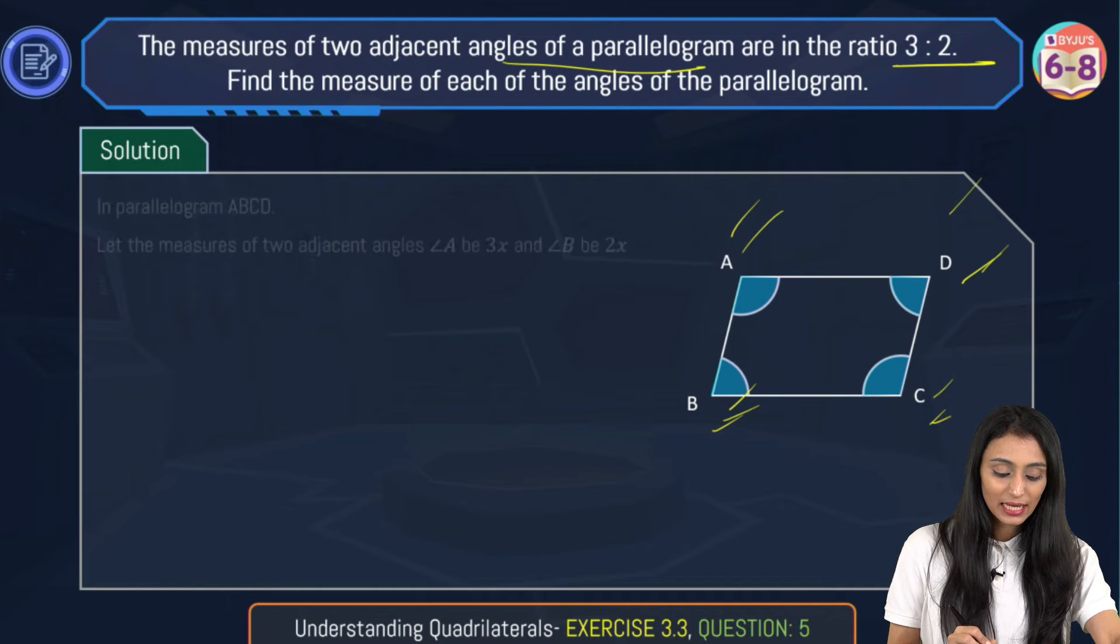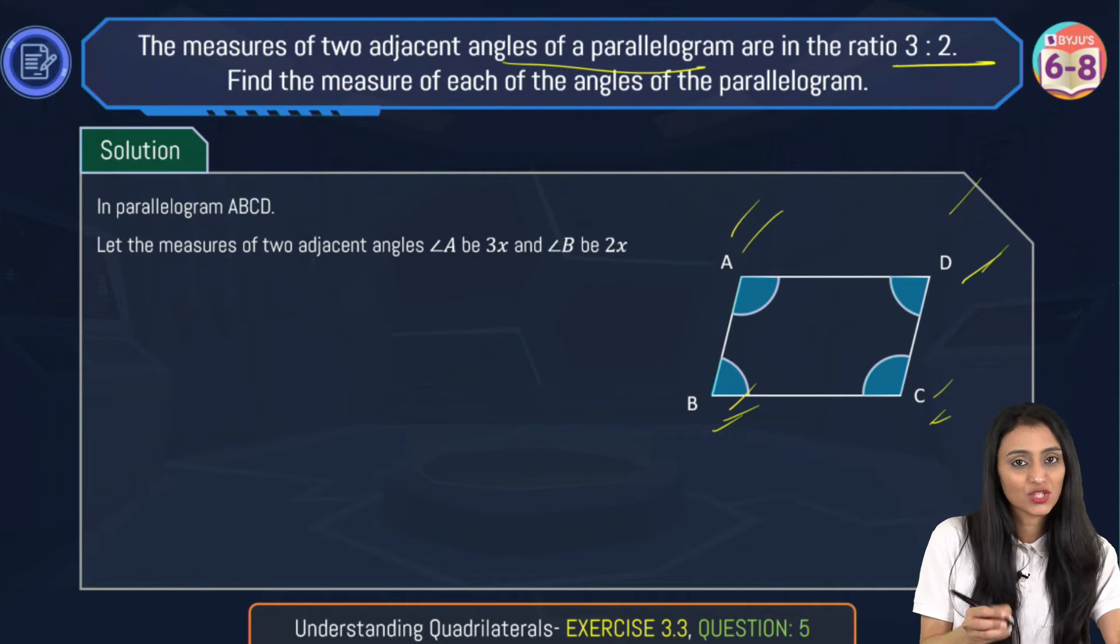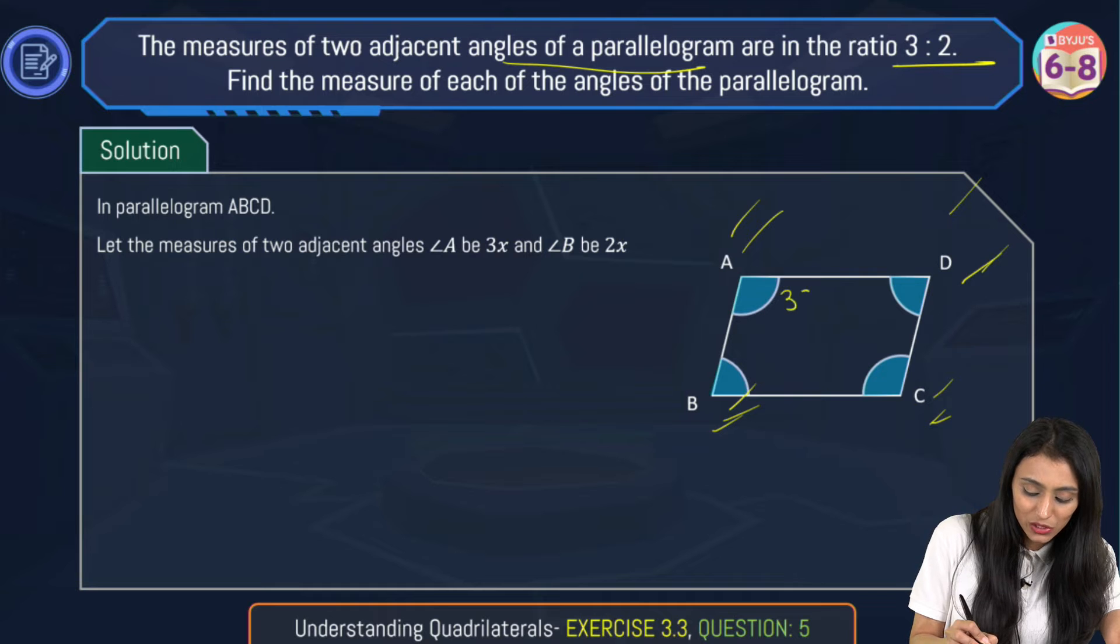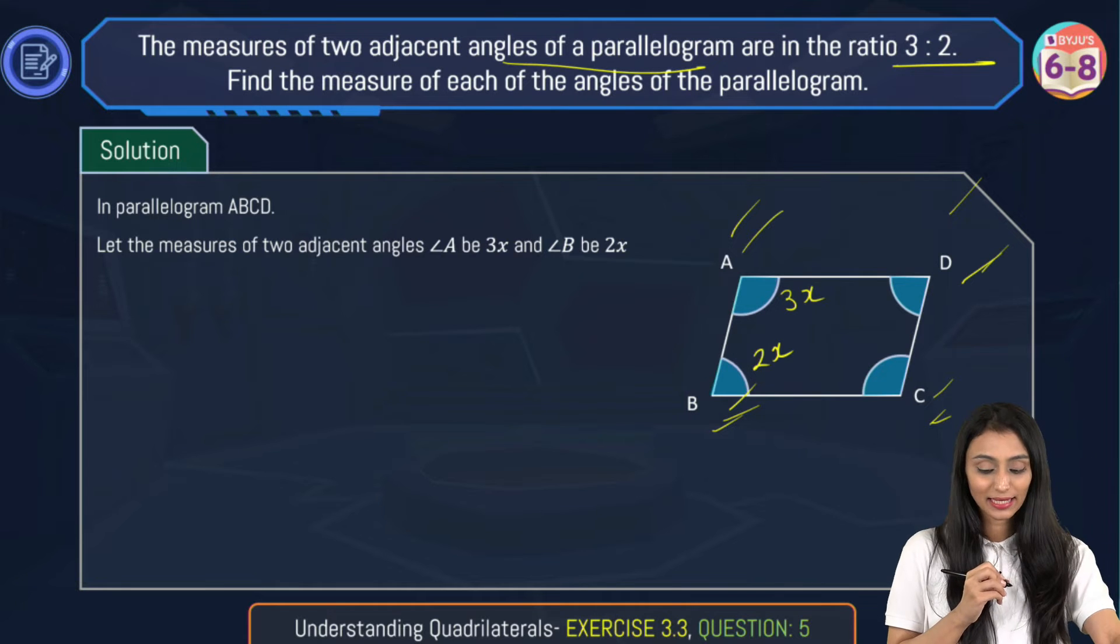Since ratio is not the exact number, let's assume here that the measure of two adjacent angles, let's say angle A and angle B, be 3x and 2x.